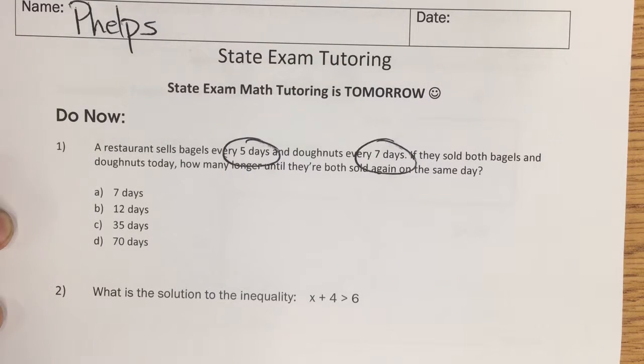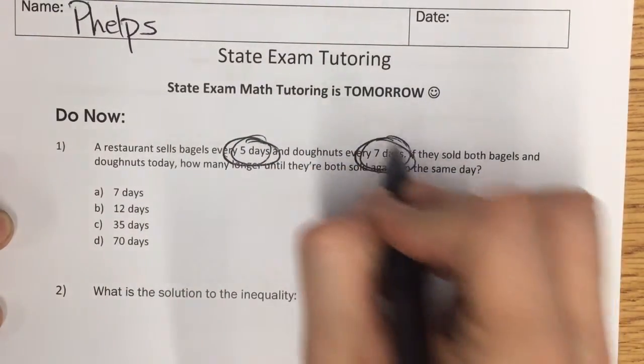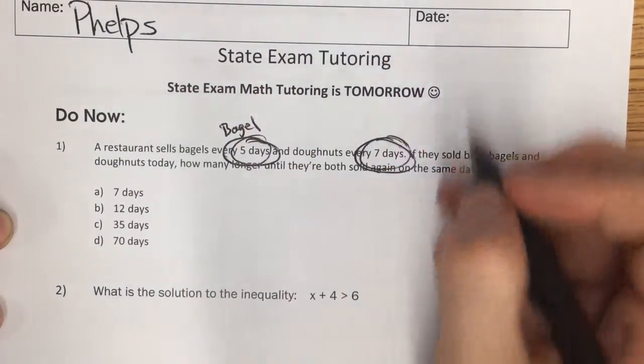Do now, number one. Correct your paper as we review. The restaurant sells bagels every five days and donuts every seven days. I'm going to go ahead and annotate. Bagels over five days.